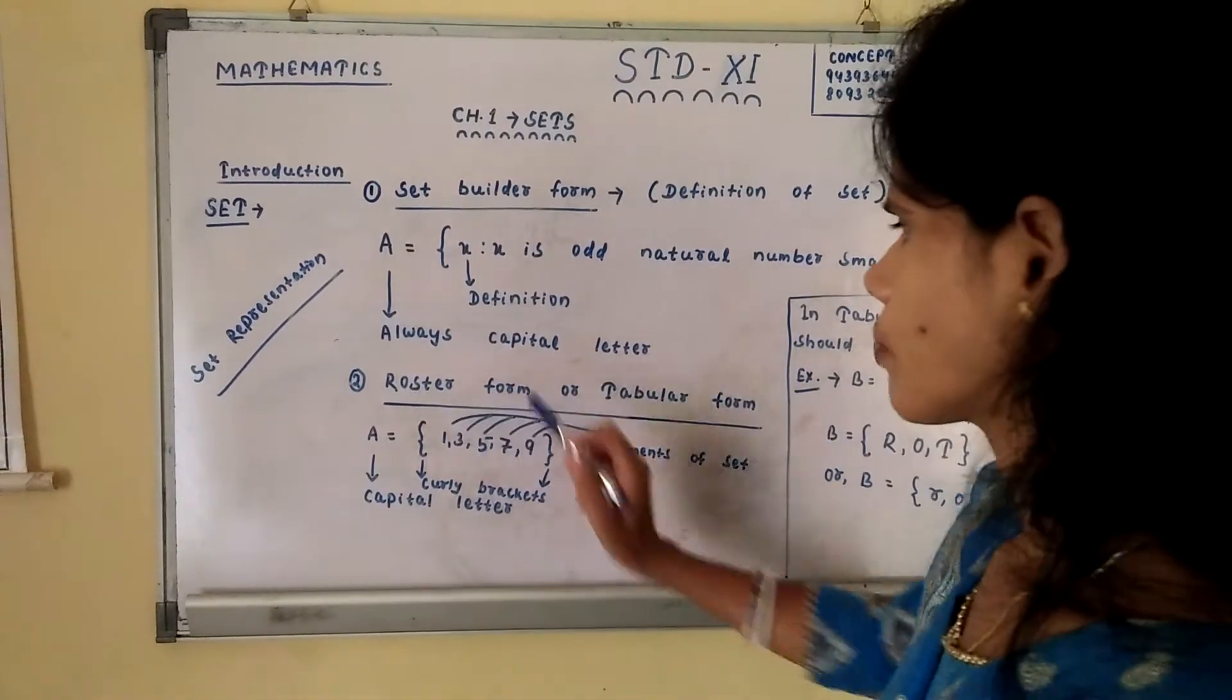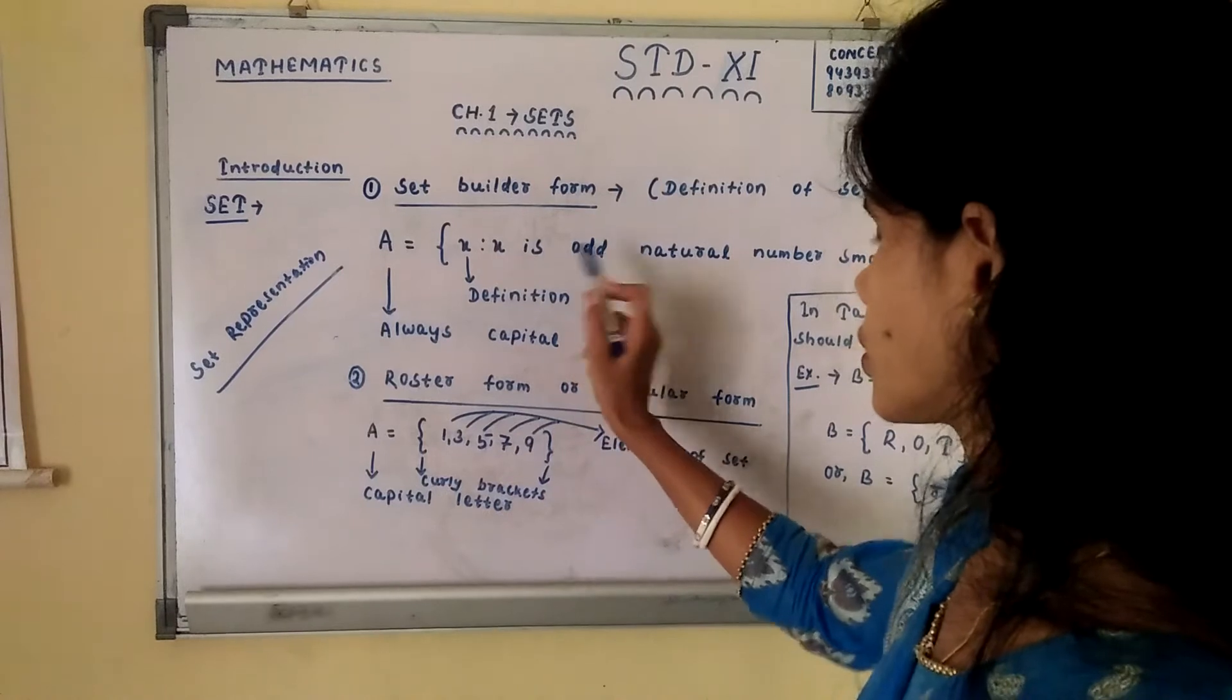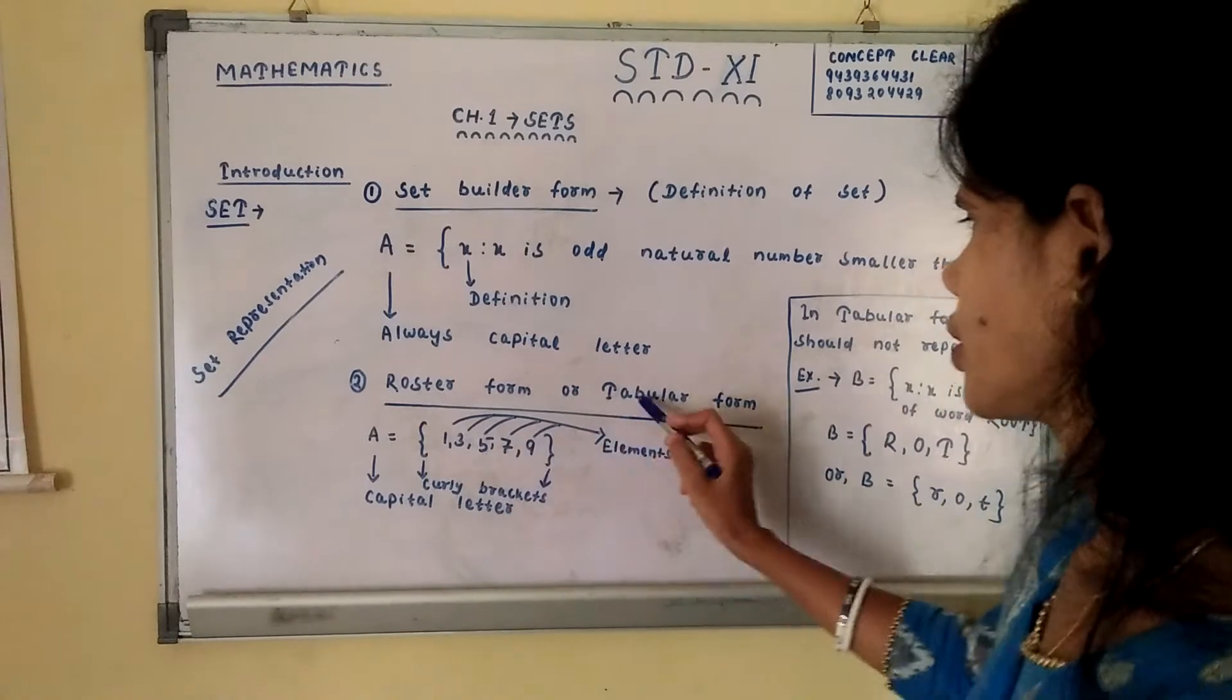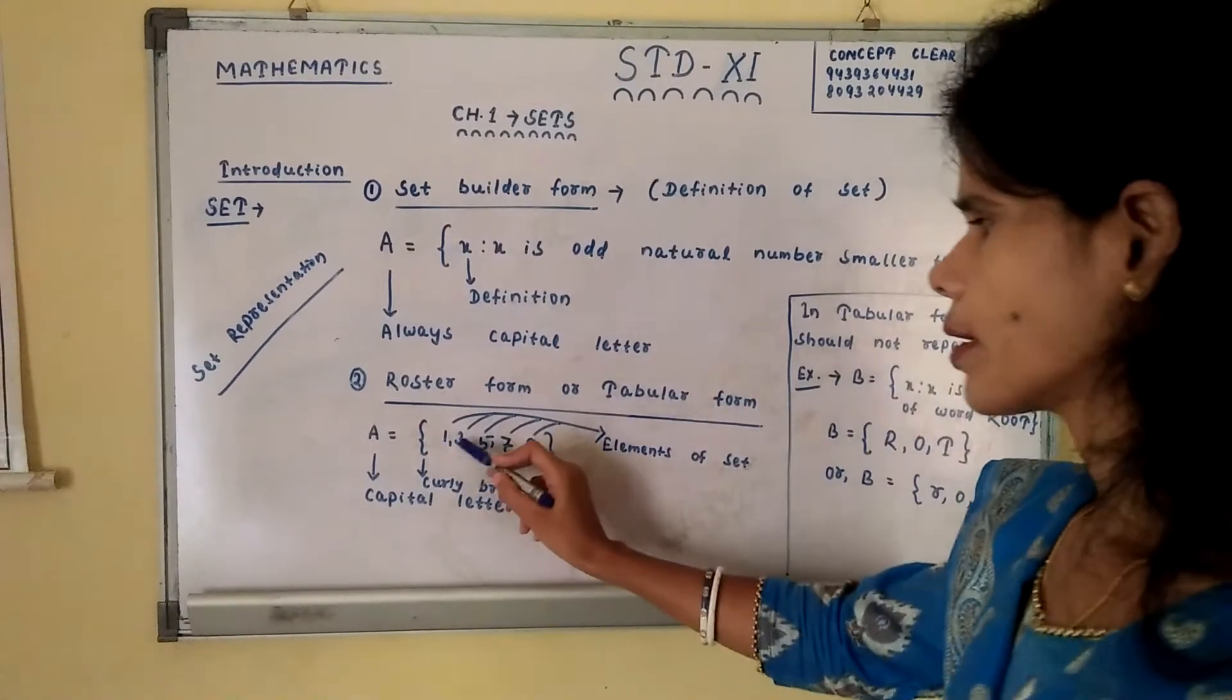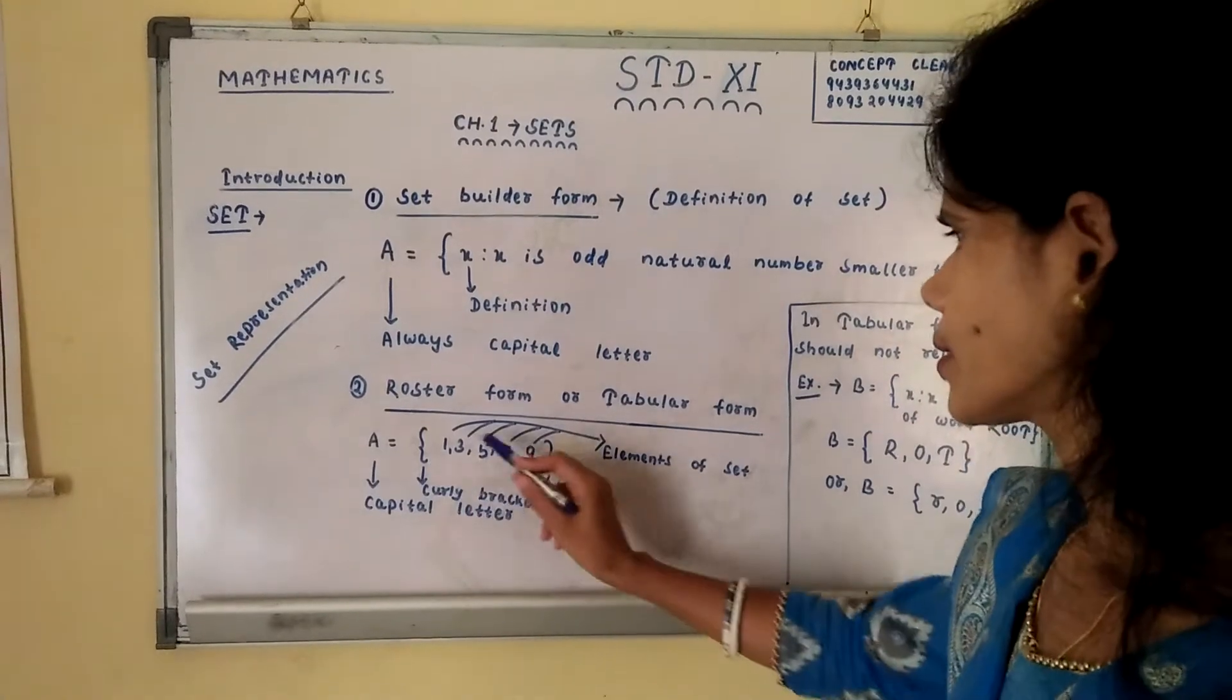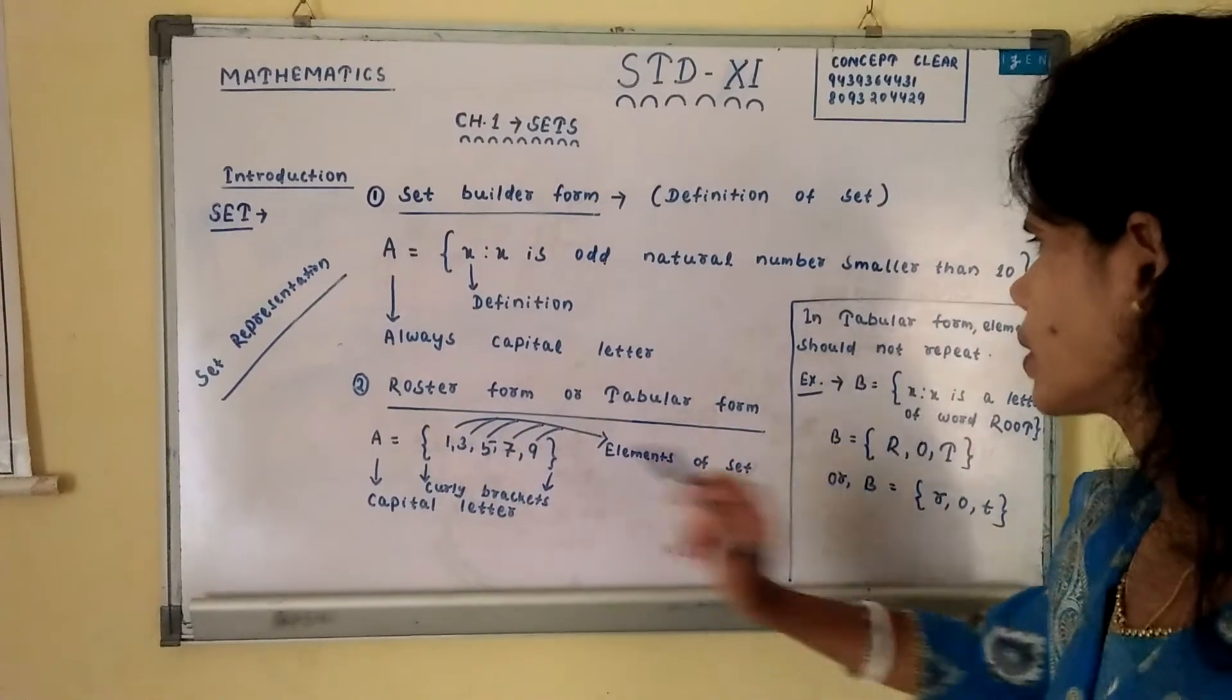And in roster form, according to definition, we have to arrange them in tabular form. That is 1, 3, 5, 7 and 9, inside curly brackets and each one is elements of a set.